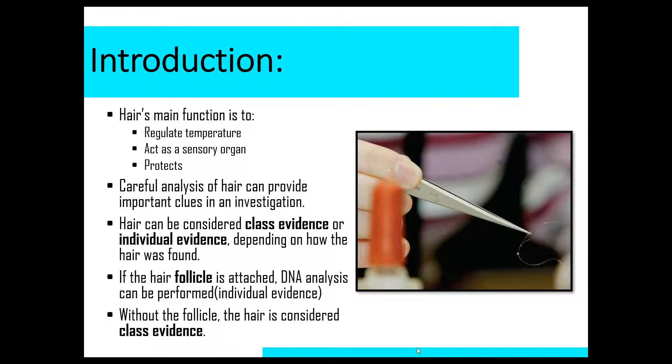If hair is found with the follicle attached, which is like the bulb or the end of the hair, then nuclear DNA analysis can be performed and we would say that hair is an example of individual evidence, because DNA narrows down the suspect field to one person. Without the follicle, the hair can still be important to crime scene investigation, but it is considered class evidence at that point.